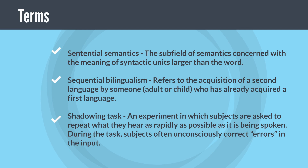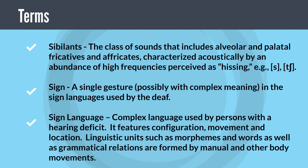Shadowing task: an experiment in which subjects are asked to repeat what they hear as rapidly as possible as it is being spoken. During the task, subjects often unconsciously correct errors in the input.